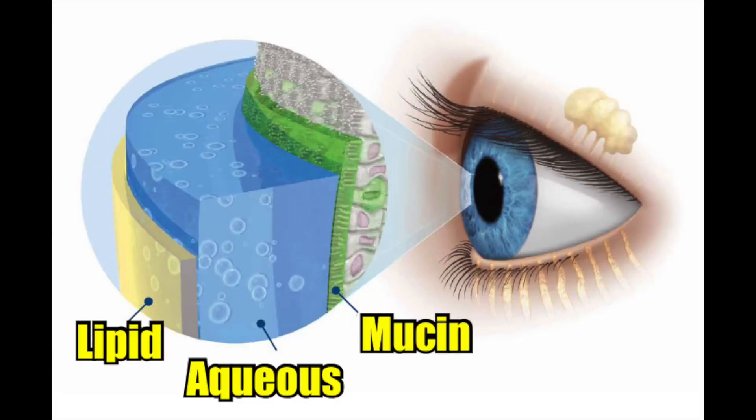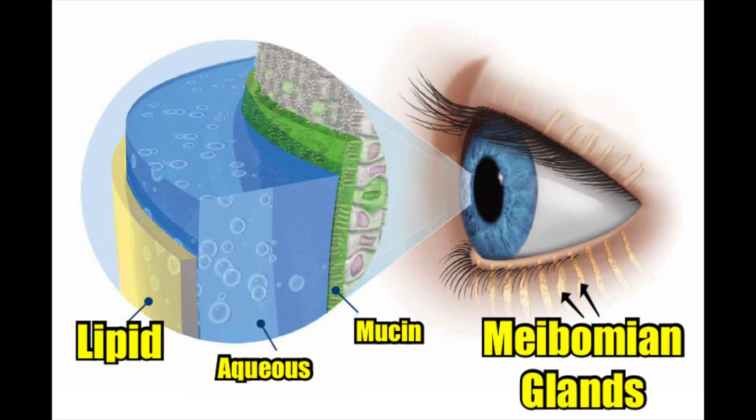Now, there's a bunch of different layers of the tear film, but one of the critical layers is the top lipid layer, and this is the layer produced by the malbumin glands in the lids, and it prevents the tears from evaporating off too quickly. And so if the malbumin gland is not producing a very good quality or very much lipid layer, then your tears are going to evaporate off too quickly.